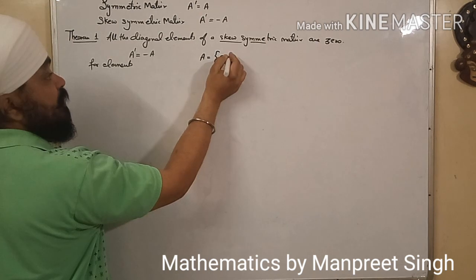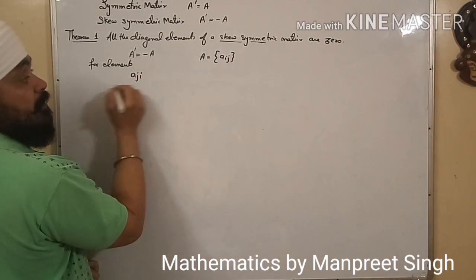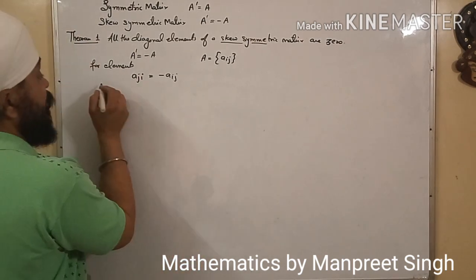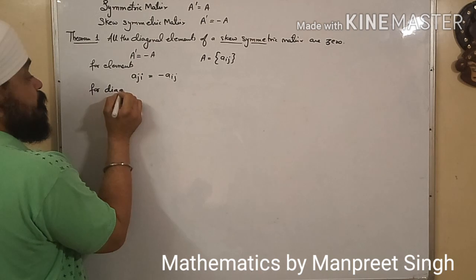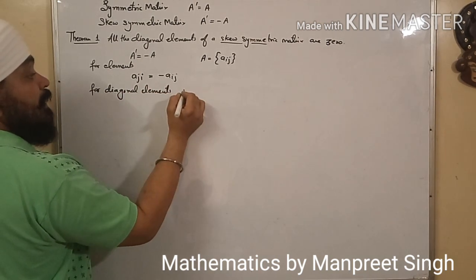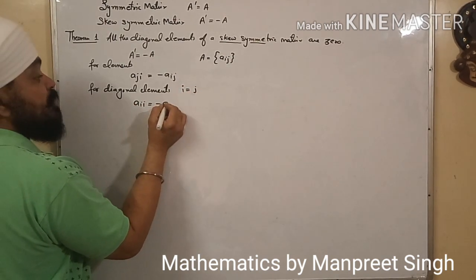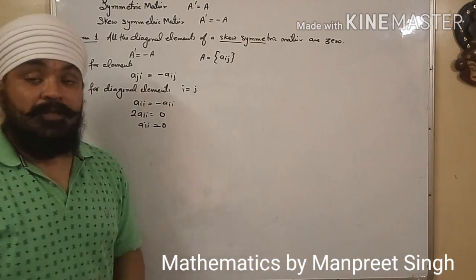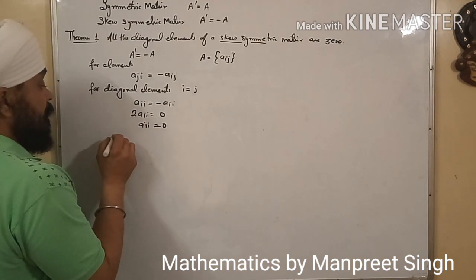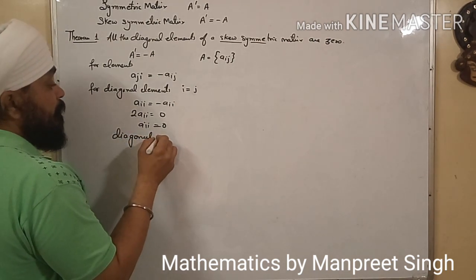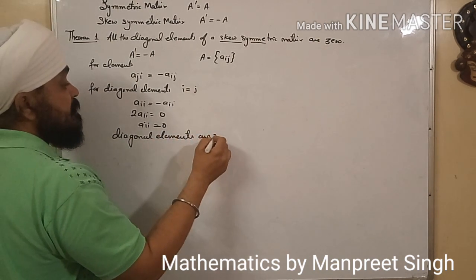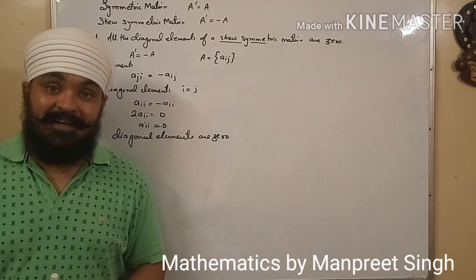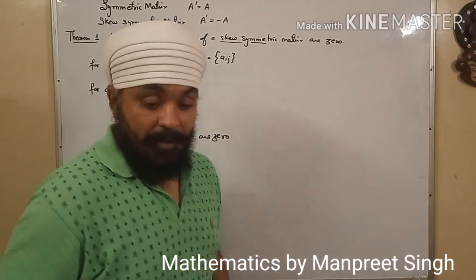Since A transpose has element Aji equal to minus Aij, for diagonal elements where i equals j, this becomes Aii equal to minus Aii, which gives 2Aii equal to 0. This clearly shows that the diagonal elements are 0. This completes the proof for Theorem 1, which states that all diagonal elements of a skew symmetric matrix are 0. Now I am moving on to the second theorem.